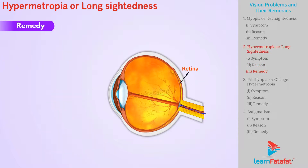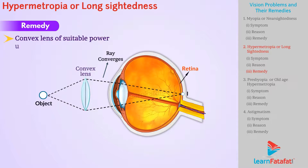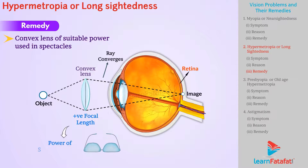Remedy: To correct this defect, there is a need to converge the light rays falling on the lens. Hence, a convex lens of suitable power is used in spectacles. Since the focal length of the convex lens is positive, the power of spectacles for a hypermetropic eye is positive.